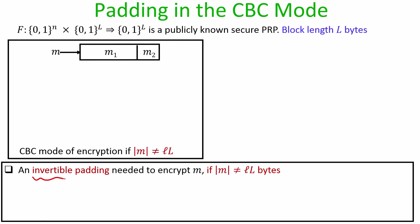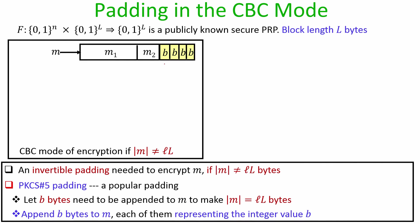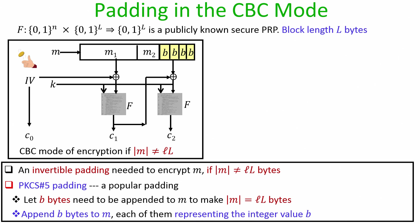The padding mechanism must be invertible and unambiguous. One important scheme is PKCS version 5 padding. Let little b denote the number of bytes needed to make the padded message length a multiple of big L bytes. We append b bytes to the last block, each representing the integer value b. The padded message can then be divided into blocks of big L bytes for CBC encryption.